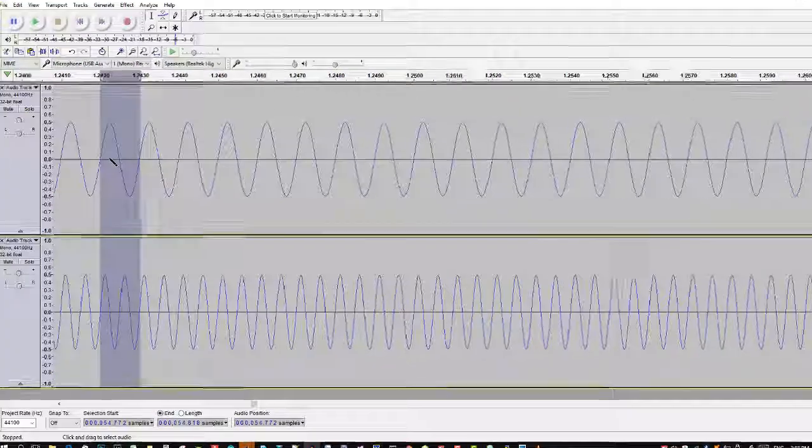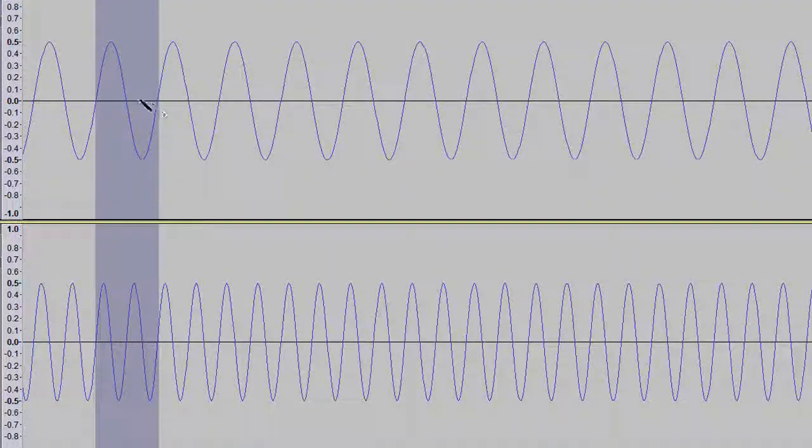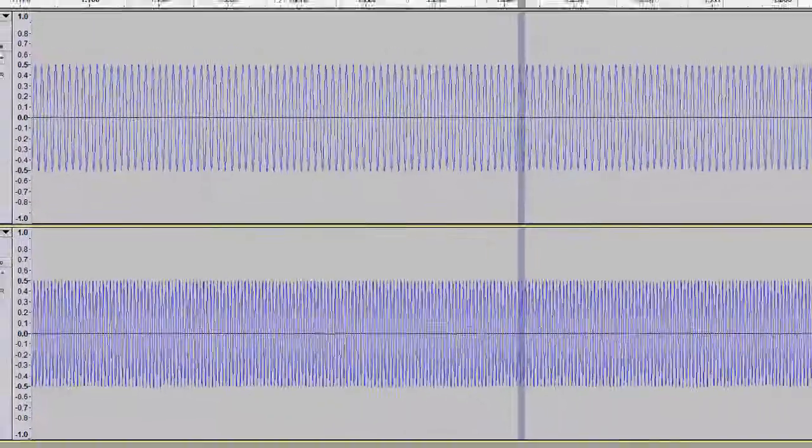I have selected one cycle of the waveform. The original audio was 1000 Hz. That means this is one cycle. Now, we can see at the same interval, we have two cycles. That means there should be some change in frequency. The frequency of the newly created signal will be twice that of the original signal. So, time scaling does affect the frequency content of the signal.